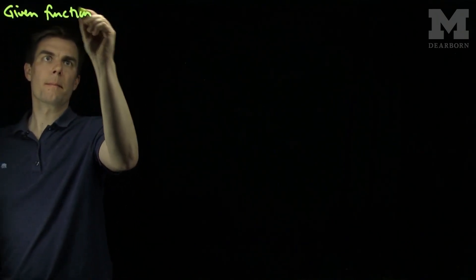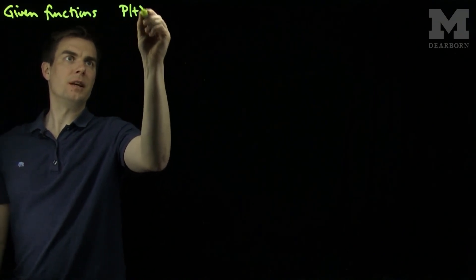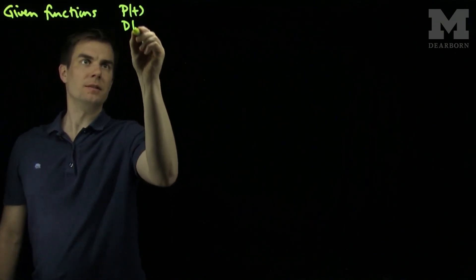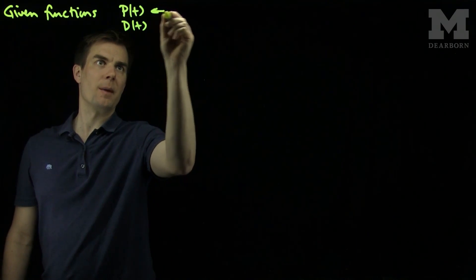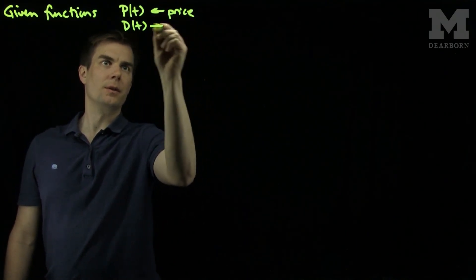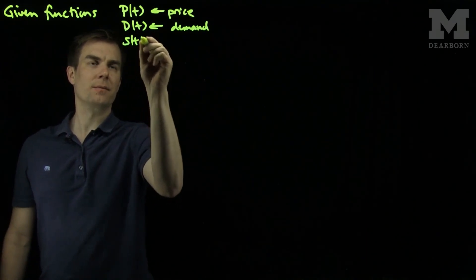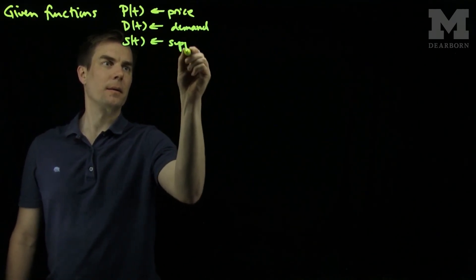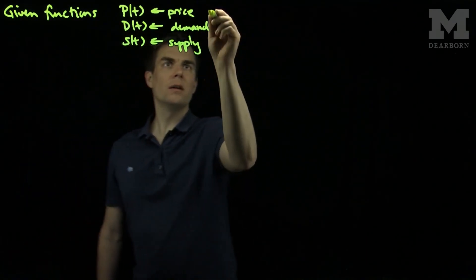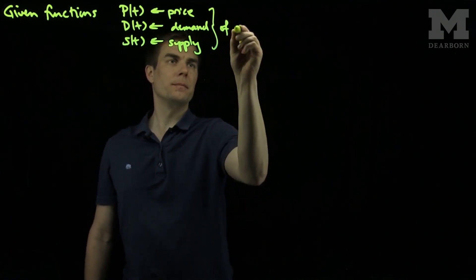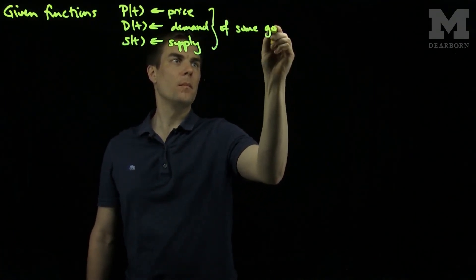Given functions P(t) of a certain commodity, D(t) for the demand, so this will be my price, this will be my demand, and S(t) will be my supply. And all of these things will be of some good.